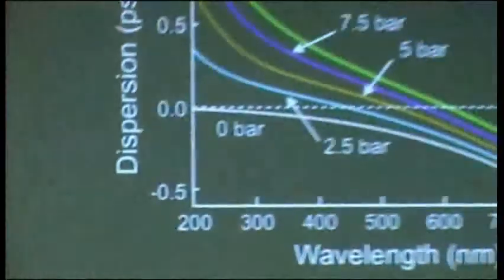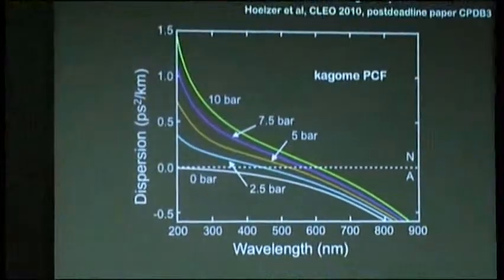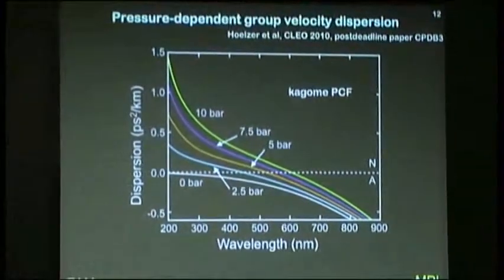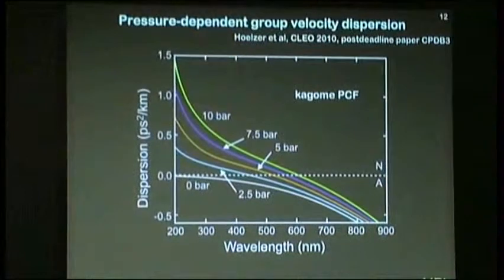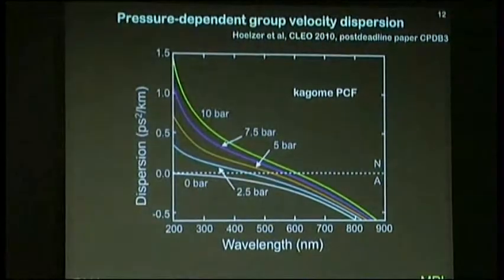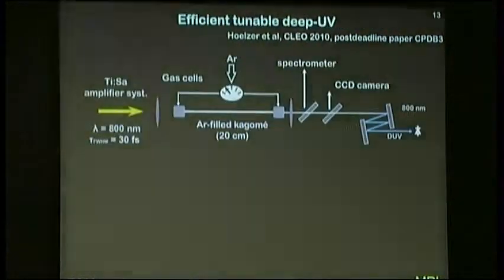If we add 2.5 bar, 2.5 atmospheres of argon, we can shift the dispersion to the blue curve, and at higher pressures it moves up. These are very delicate adjustments to the dispersion profile. This is not a massive change in dispersion, it's just what you want. You've got a knob you can turn. A lever you can push up and down and change the dispersion profile as you wish without having to change any of your optics.